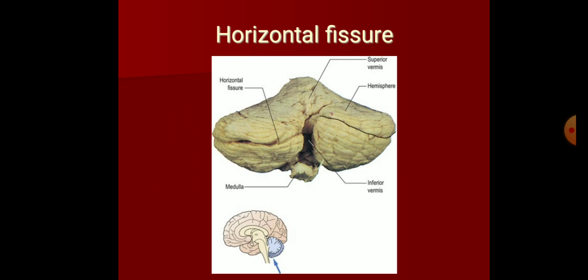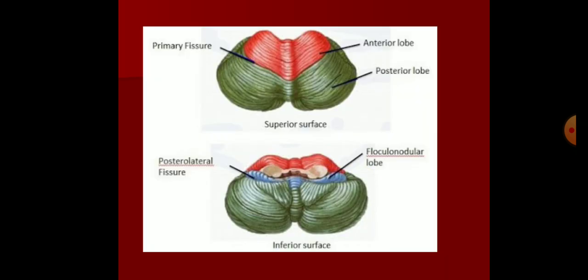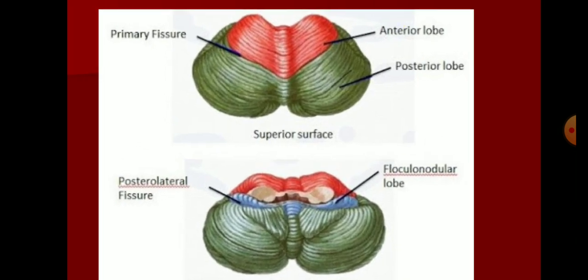Looking at the figures: the fissura prima, or primary fissure, separates the anterior lobe (marked in red) from the posterior lobe (marked in green). On the inferior surface, the structure marked in blue is the flocculonodular lobe, and the posterolateral fissure separates it from the rest of the cerebellum. With that, we finish the external features of the cerebellum. Thank you.